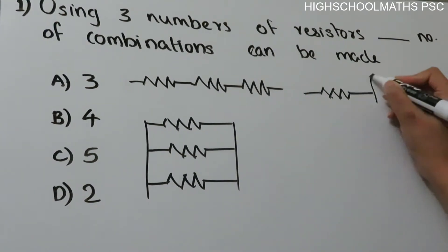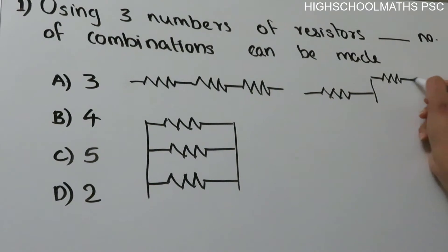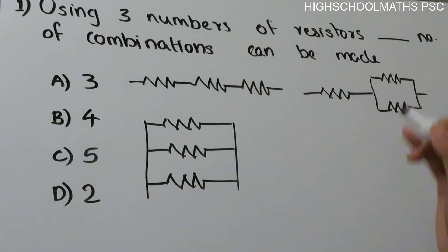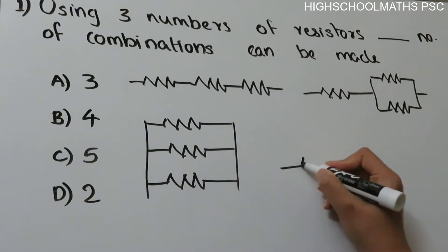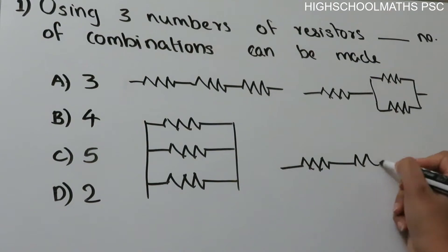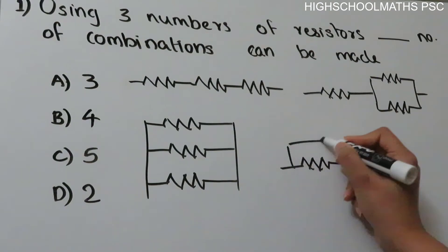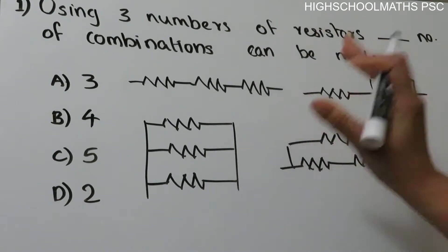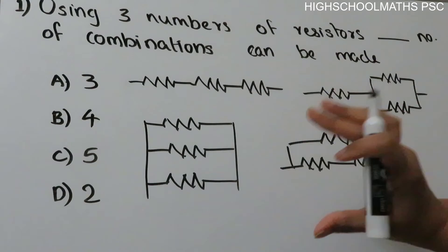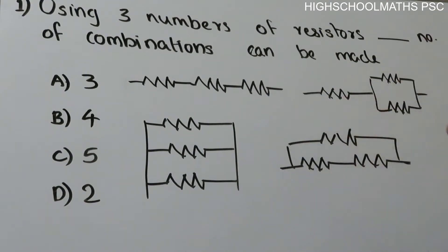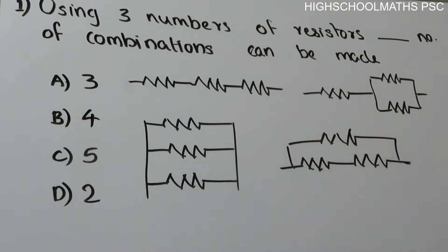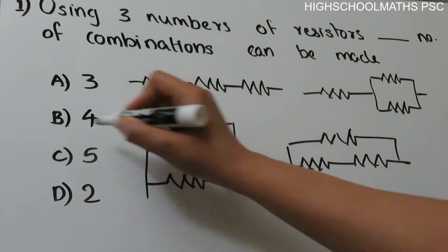In another case, we connect two resistors in parallel and then add a common resistor in series. These are the combinations: all 3 in series, all 3 in parallel, 2 in parallel then add series, and 2 in series then add parallel. There are 4 combinations using 3 resistors. Option B is the answer.